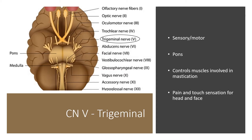Cranial nerve 5 is the trigeminal nerve. It has both sensory and motor function and is located on the pons. It controls muscles involved in mastication and is also involved in pain and touch sensation for your head and face.